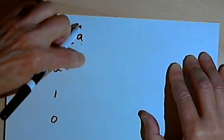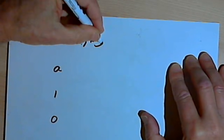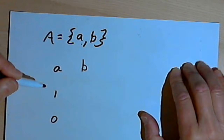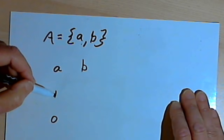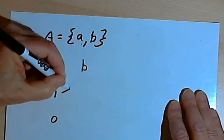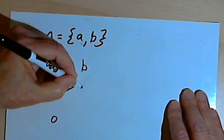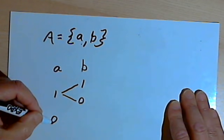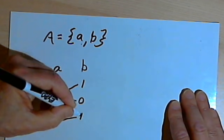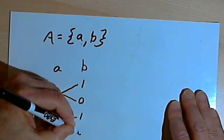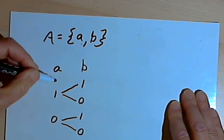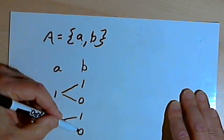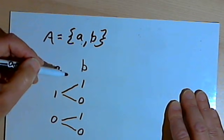Now let's expand that set to two elements, A and B. If I have a subset and A is in it, I might have a B in it also, or I might not. If I have a subset with no A in it, I might still have a B, or I might not. So I went from two subsets with just one element to four subsets when I have A and B as possible elements.